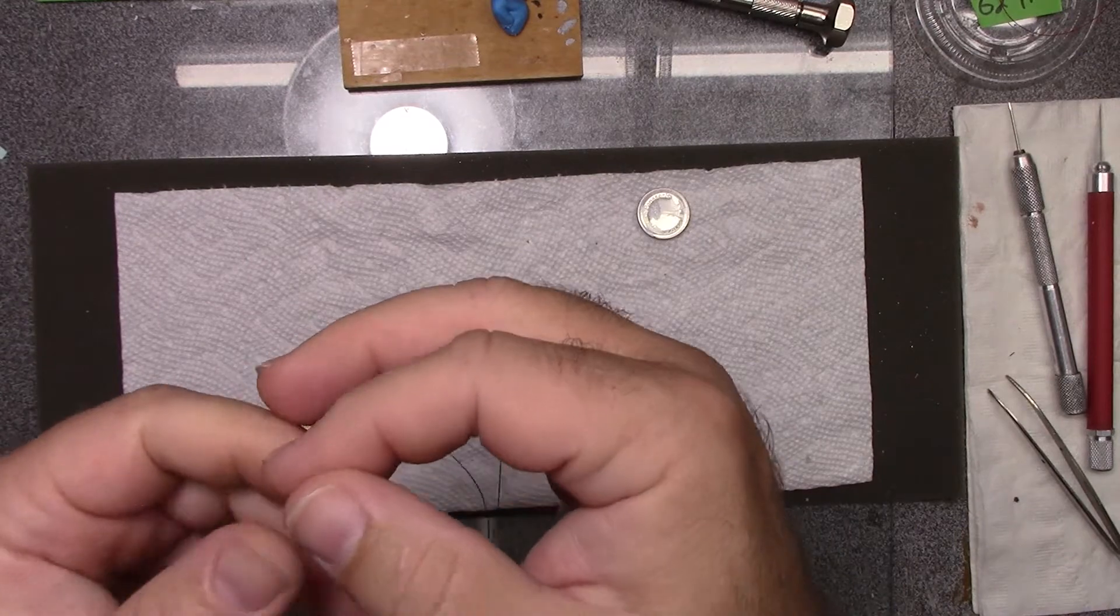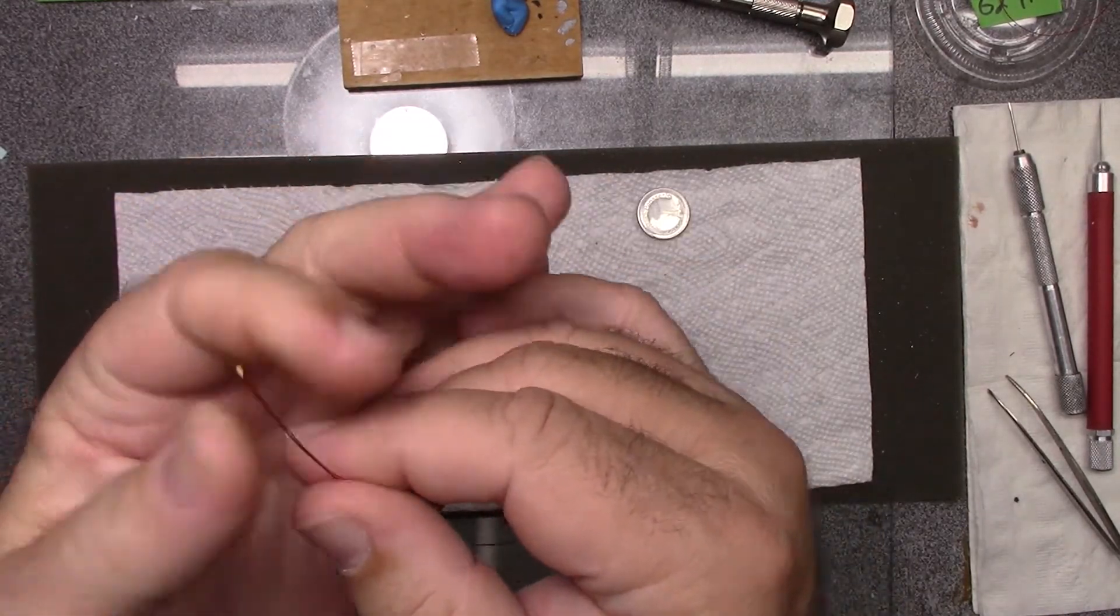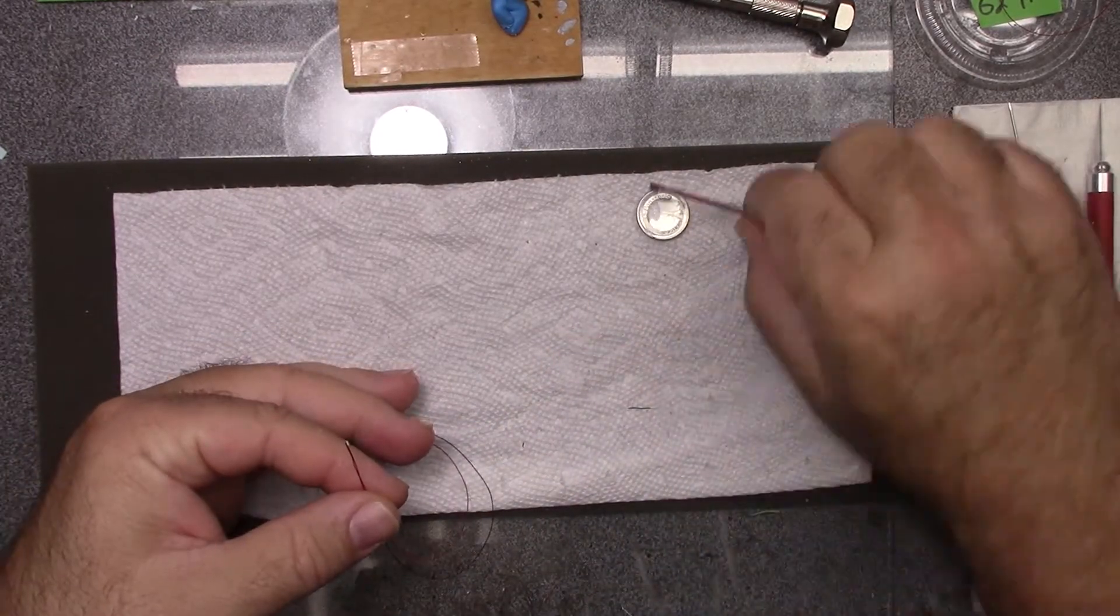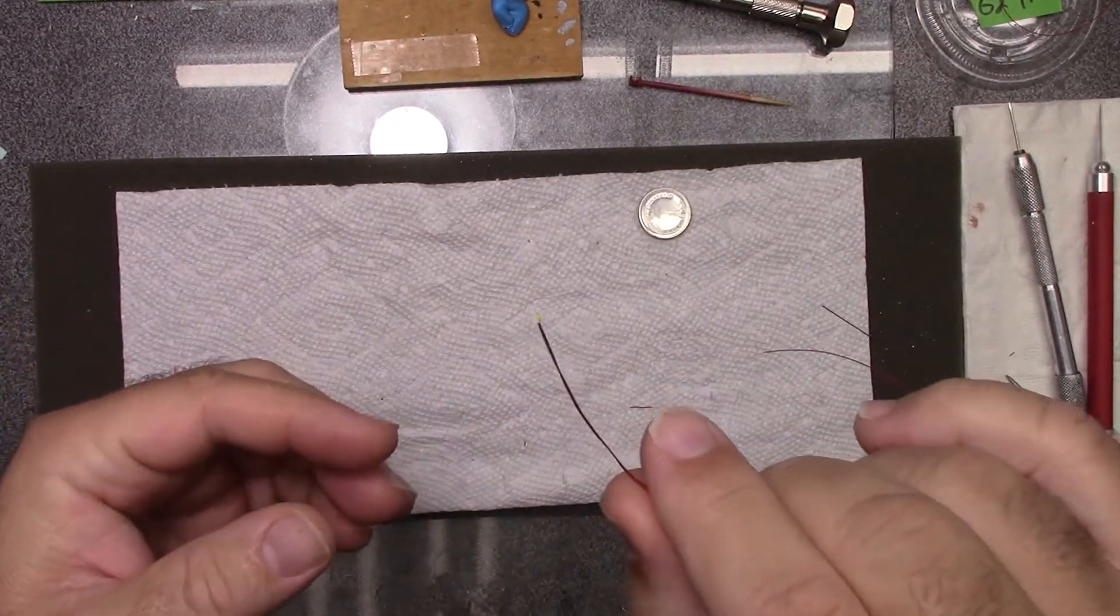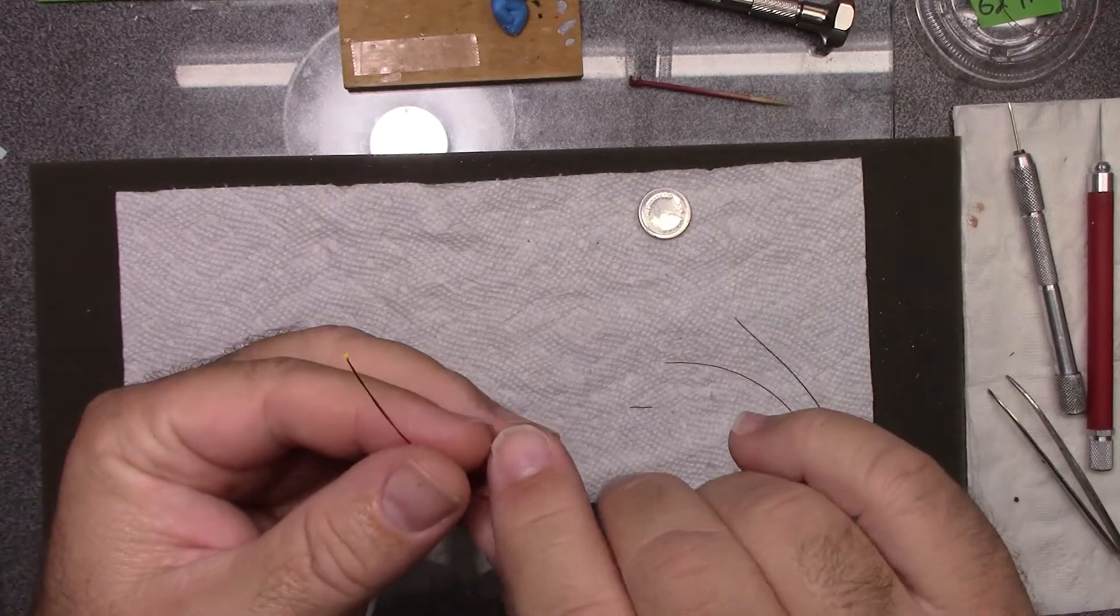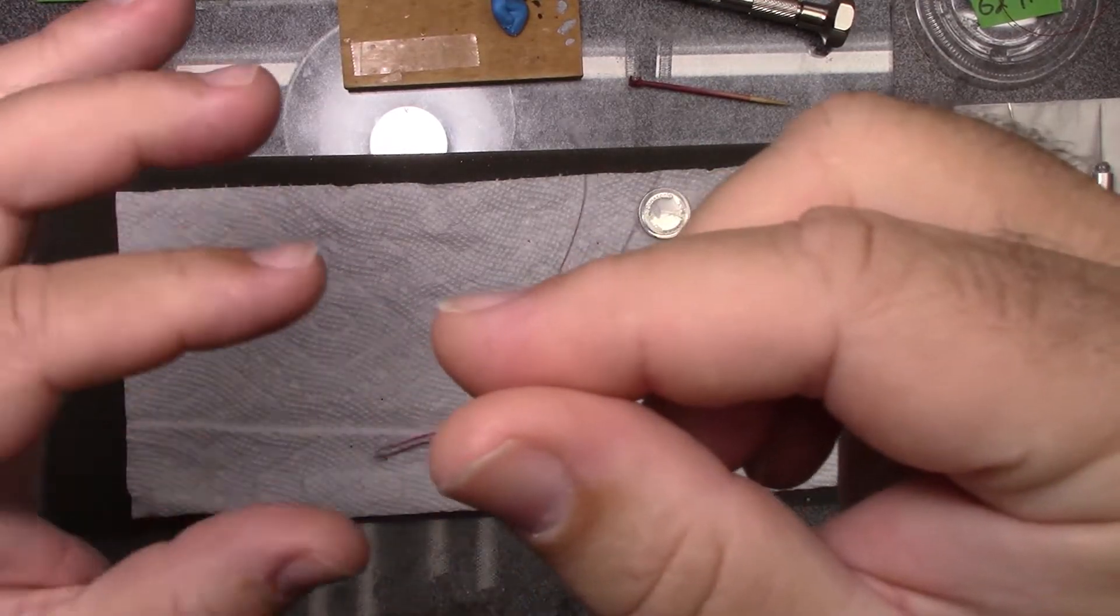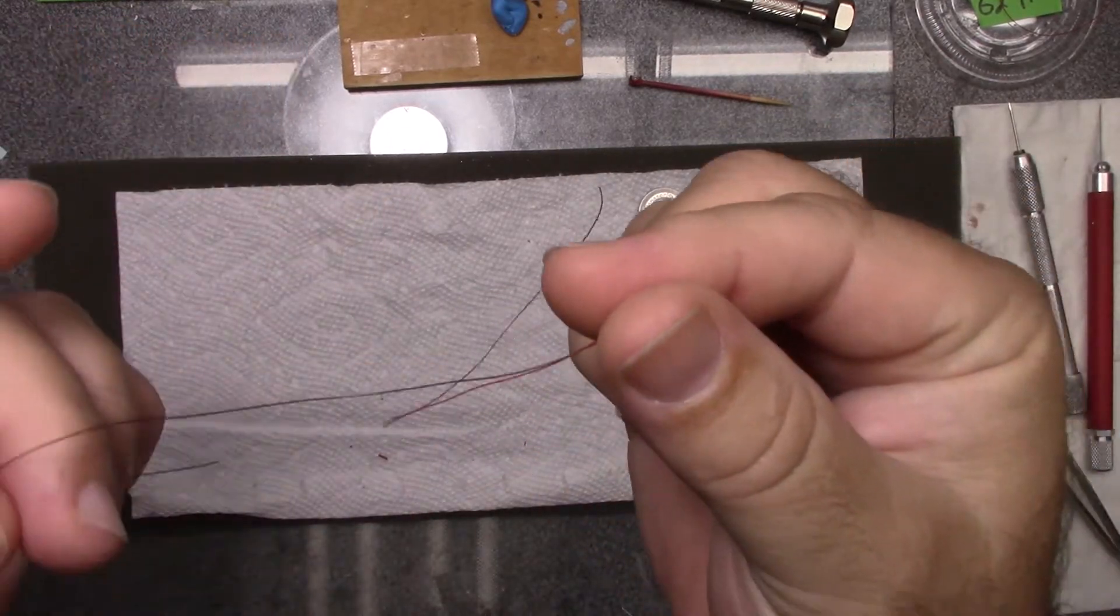This one here is the 0603. So what I like to do, there's a couple things I like to do before we mount the LED. Number one, first thing I like to do is I like to wind up the strands here.